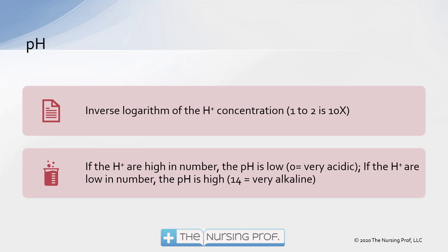When we talk about pH, what we're talking about is an inverse logarithm. If you move from 1 to 2 on the pH scale, it's not just one place — it's 10 times as much. So moving from 7 to 8 is moving up 10 times; it's 10 times as concentrated alkali as it would be at 7. If the number is high, that indicates a very alkalotic situation. If the number is low, it indicates very acidic.